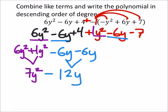And then finally, we just have the constants, 4 and negative 7. So plus 4 minus 7, which combined would give us a negative 3.